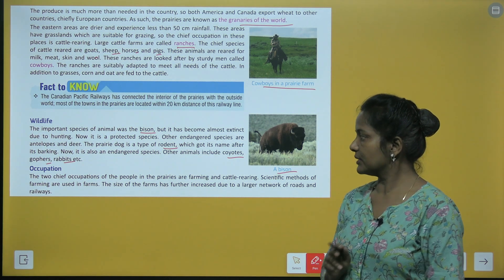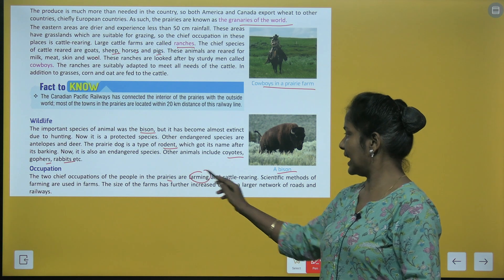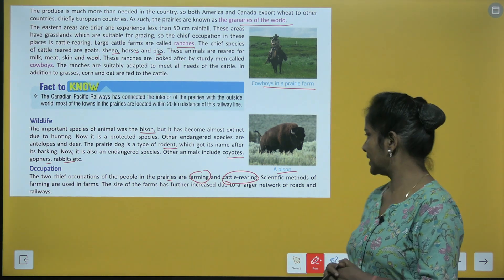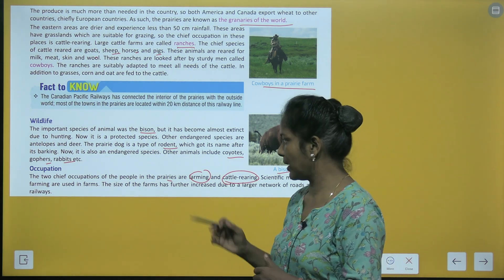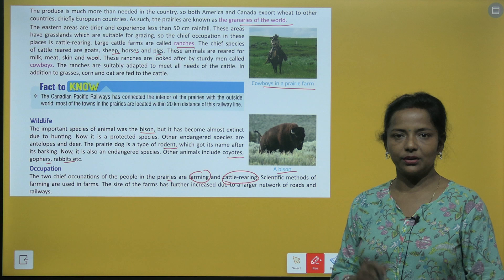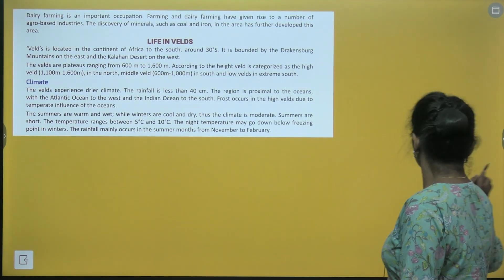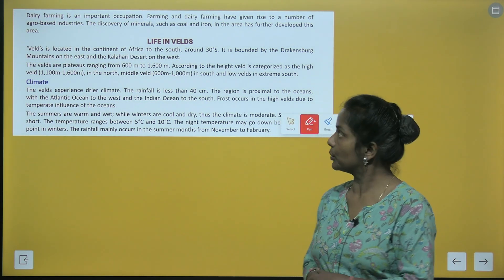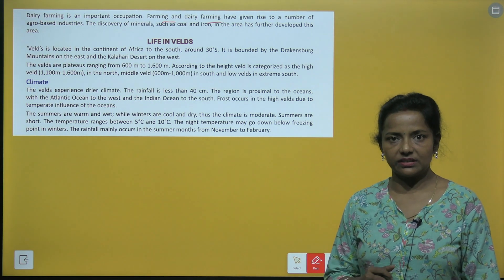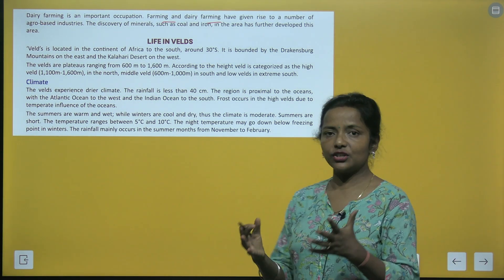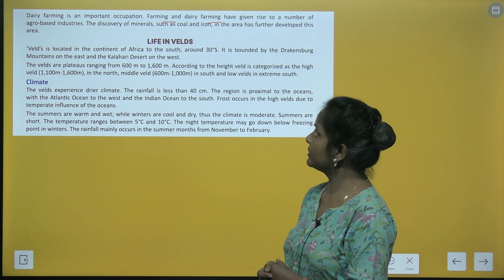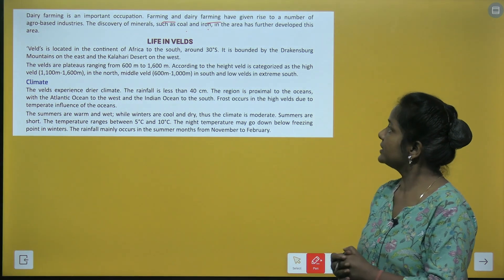The two chief occupations of the people in the prairies are farming and cattle rearing. Scientific methods of farming are used. Dairy farming is an important occupation. Farming and dairy farming have given rise to a number of agro-based industries. The discovery of minerals such as coal and iron has further developed this area.